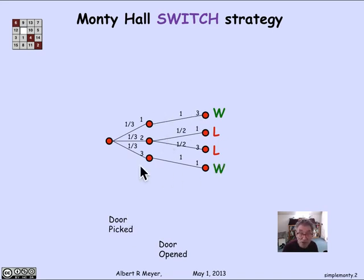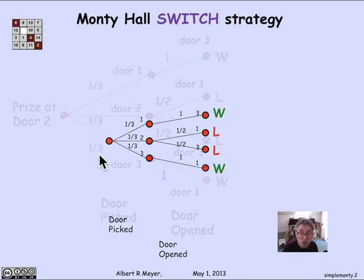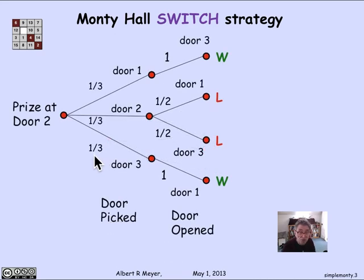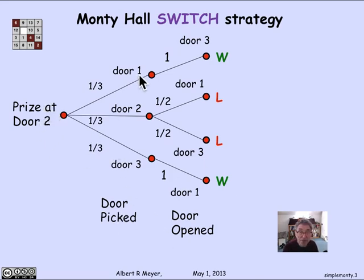So let's just enlarge this tree to get a better look at it. There's the same tree where we're starting off assuming that the prize is at door two, and then the door picked can be either door one, door two, or door three, and the door opened can be door three, door one, door three, or door one, according to the constraints on Carroll.